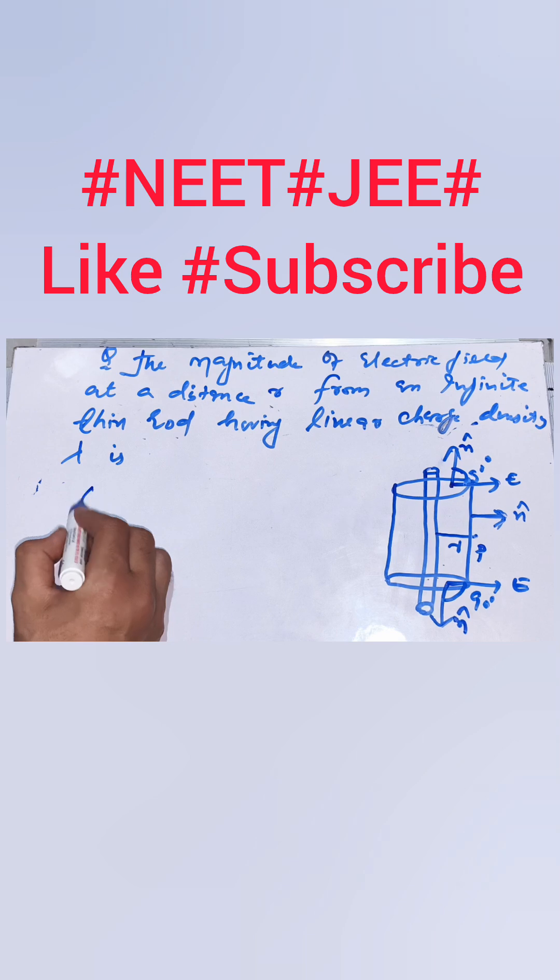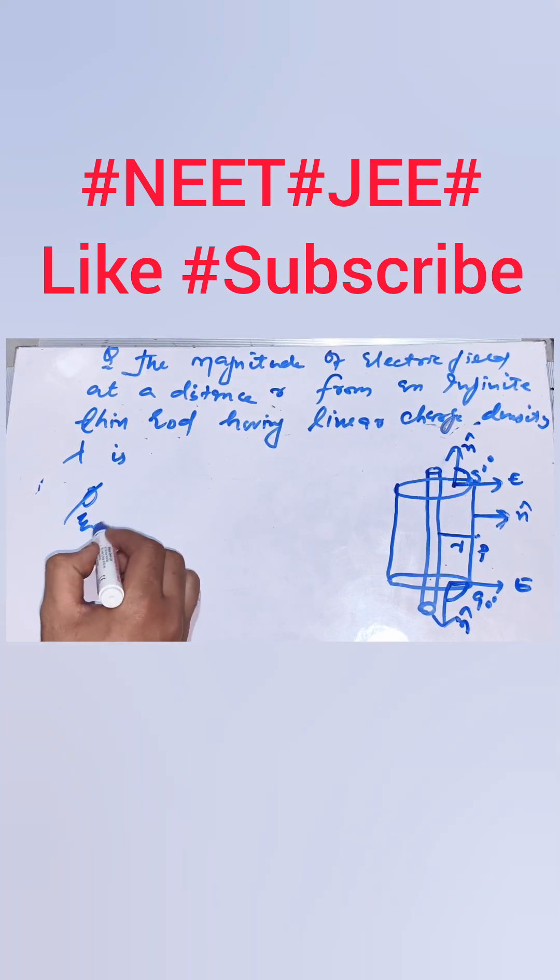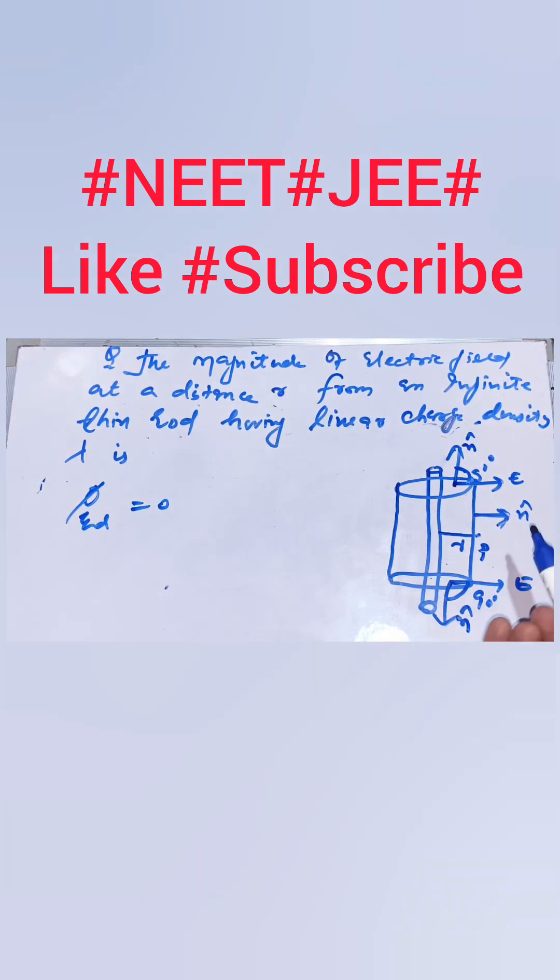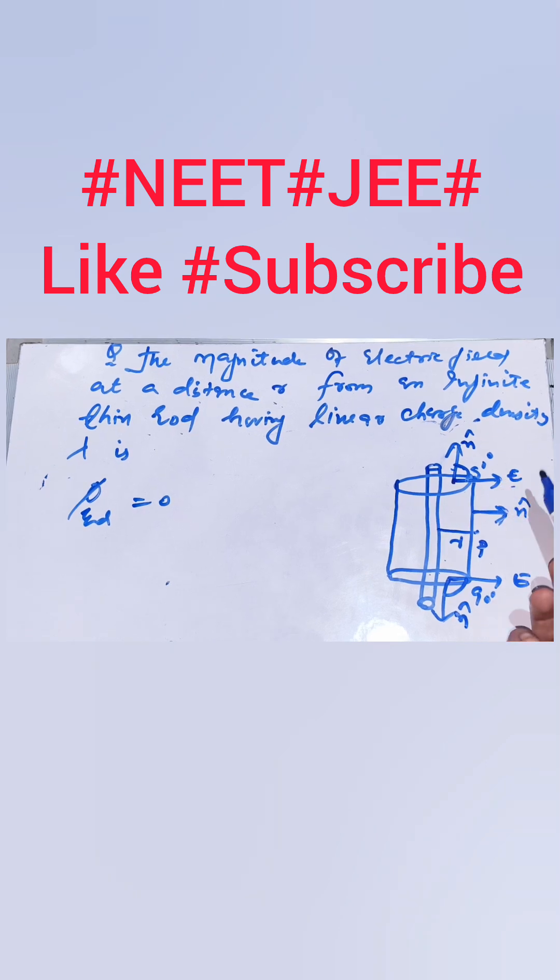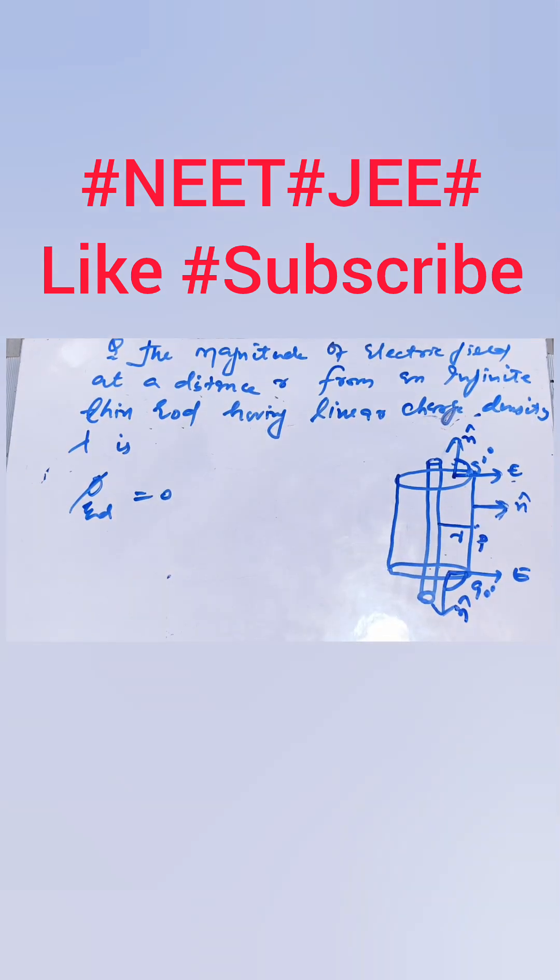So along the ends the flux, net flux along ends is equal to zero because electric field and area vector have 90 degree angle so it will be cos 90 that will be zero as per Gauss law.